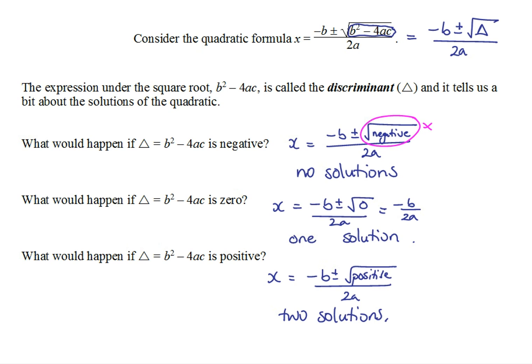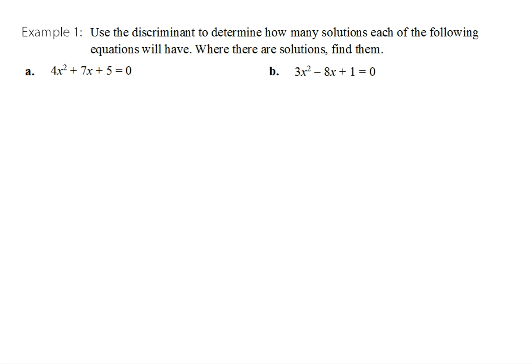The key thing is linking the idea of the discriminant to the number of solutions. There are many different problems where it's about the number of solutions or the number of points of intersection, and the discriminant should be what comes to mind. Let's have a look at some examples. We want to use the discriminant to determine how many solutions each of the following equations will have, and if there are solutions we should find them.